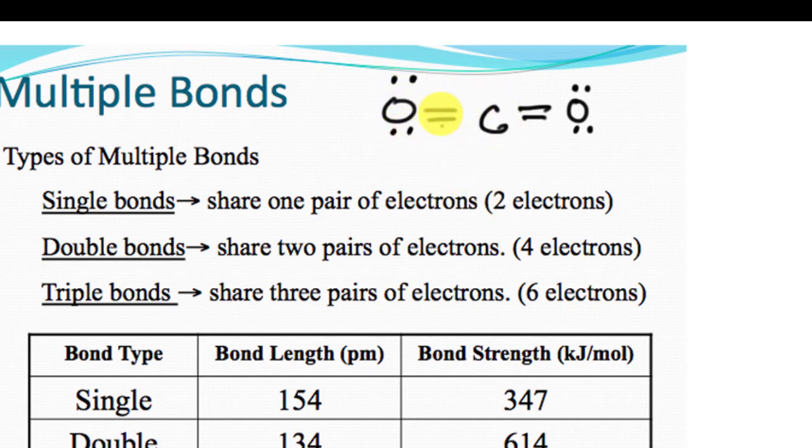But for carbon, there's 2 double bonds on either side, so there would be 2, 4, 6, 8 electrons that carbon is sharing with each of the oxygens. Oxygen is sharing 4 electrons, and has 2 electron pairs, or 4 electrons, that it is not sharing.